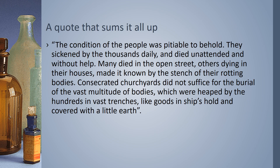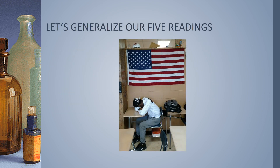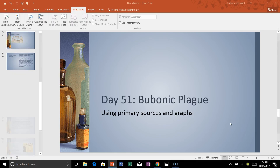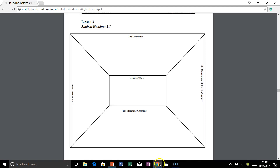These five readings really show the bubonic plague pretty well. Going back to generalize: the bubonic plague moved so quickly, people didn't even know how to process it. It killed on a scale that was unmanageable. It broke down fundamental structures in society — family structures, economic structures, religious structures — just broke down. The gruesomeness of the death, the horrible nasty way that you died, is a generalization you can get from all the readings.